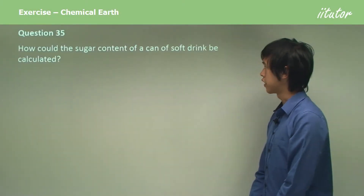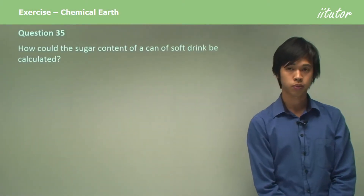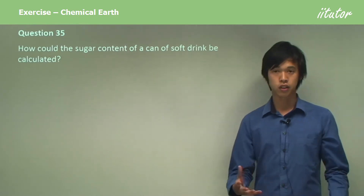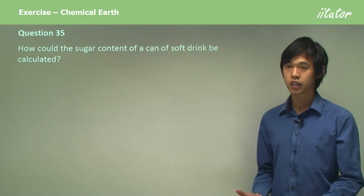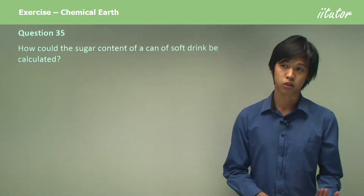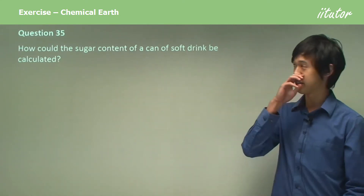How could the sugar content of a can of soft drink be calculated? So if we had a can of soft drink, could we calculate the amount of sugar, assuming of course we don't just look on the can for that kind of information?